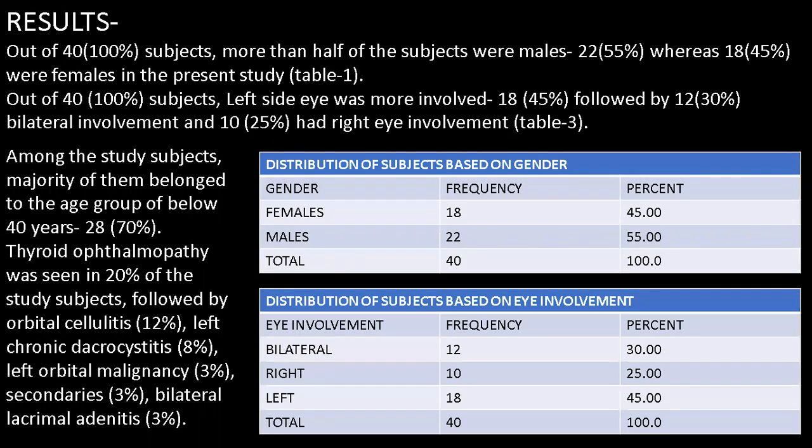Out of 40 subjects, more than half were males, constituting 22 cases, whereas 18 were females, as depicted in Table 1. Left eye was more involved in 18 cases, followed by 12 cases with bilateral involvement, and 10 had right eye involvement, as depicted in Table 2. Among the study subjects, the majority belonged to the age group below 40 years, constituting 28 cases. Thyroid ophthalmopathy was seen in 20% of study subjects, followed by orbital cellulitis, left chronic dacryocystitis, left orbital malignancy, secondaries, and bilateral lacrimal adenitis.